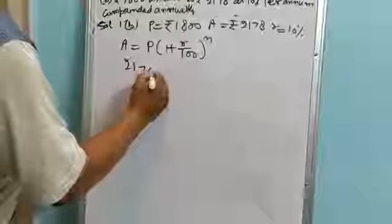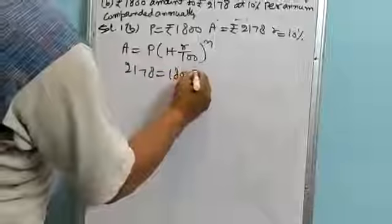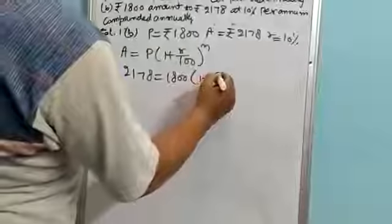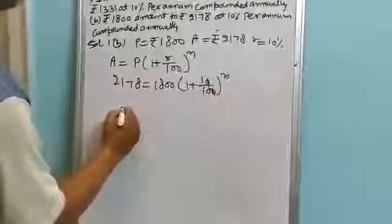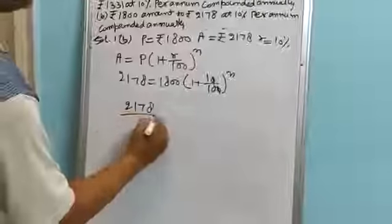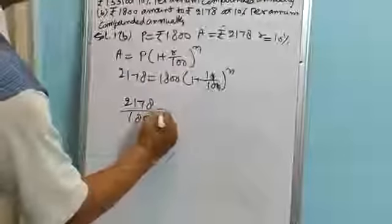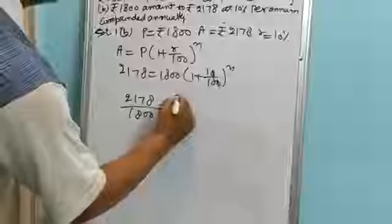Here the amount is Rs. 2178 upon 1800. This will be 11 by 10 to the power N.